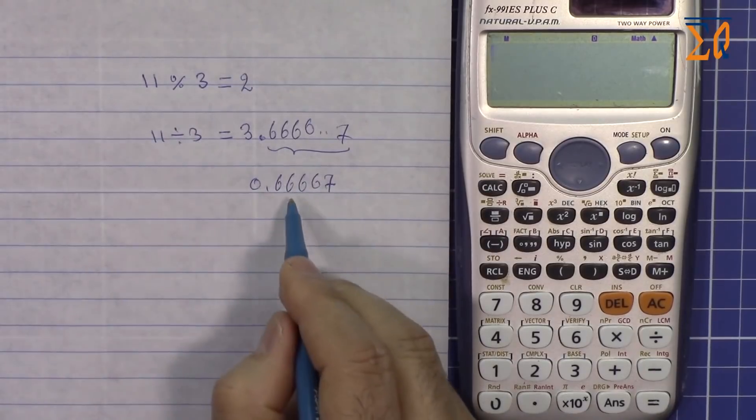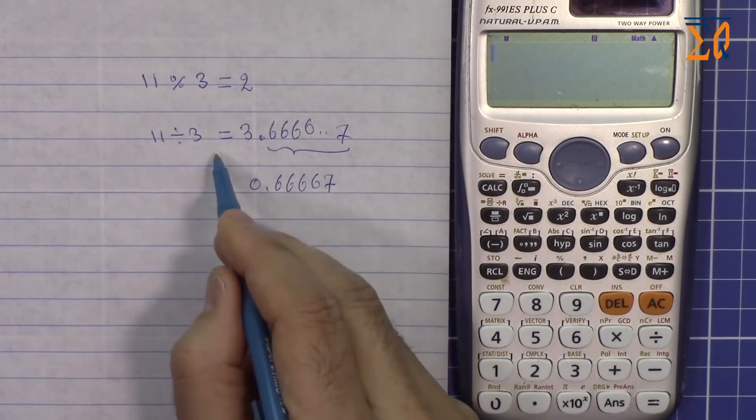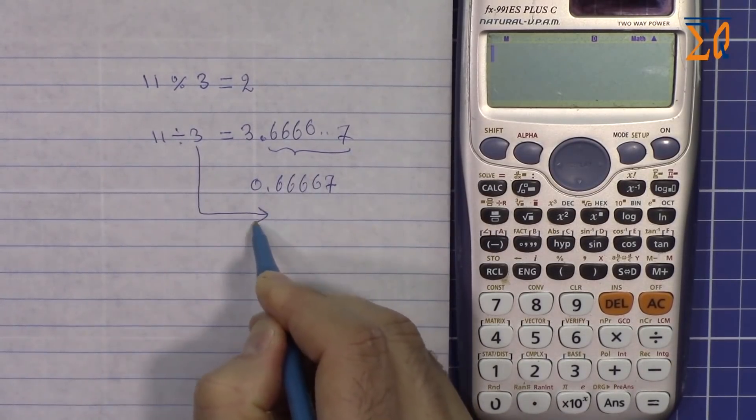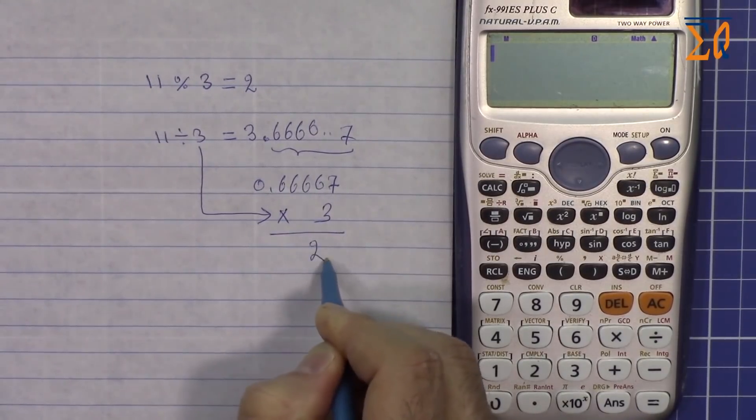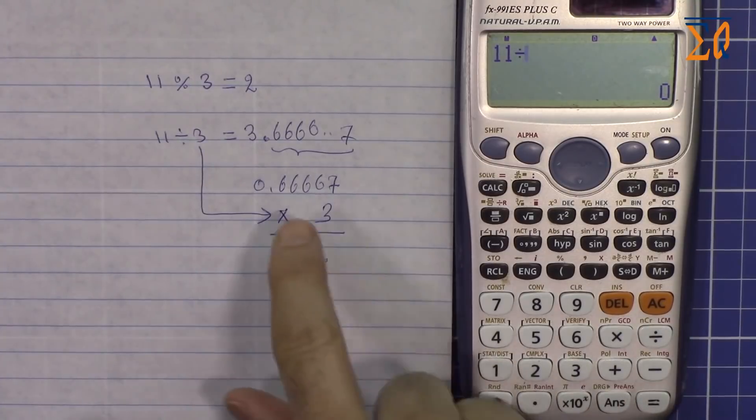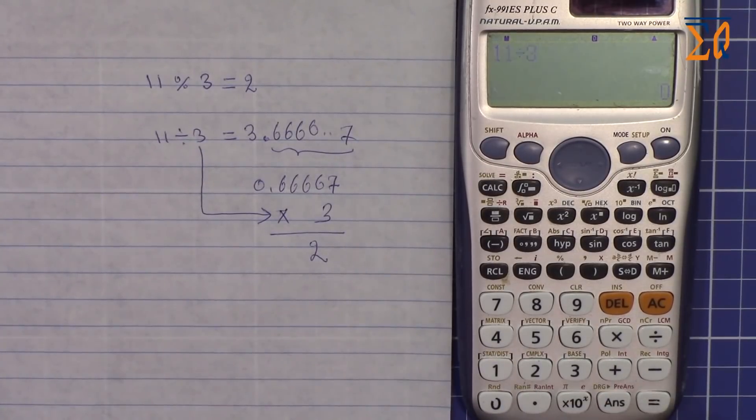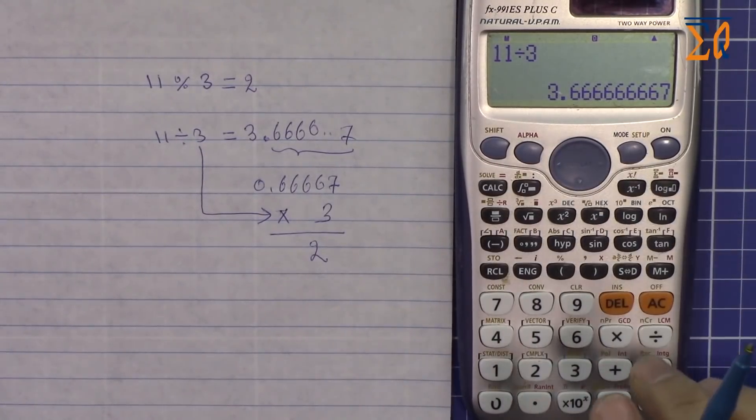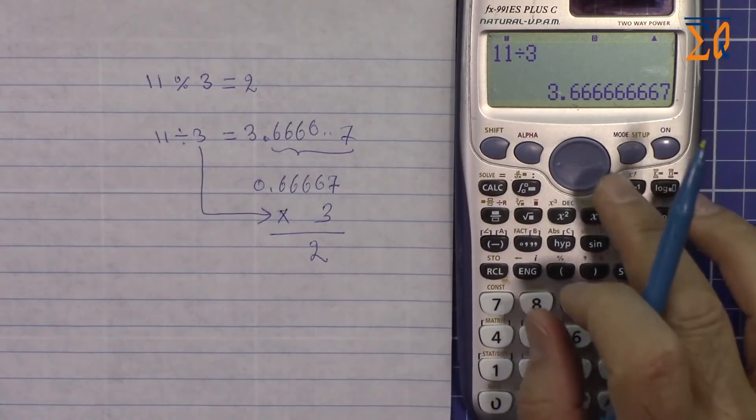Because we divide this by 3, multiply this by 3, so 3 times which means multiply by 3 and the answer is 2. Let's do it in calculator, so 11 divided by 3 we get 3.66667, to get this part just subtract 3 minus 3.